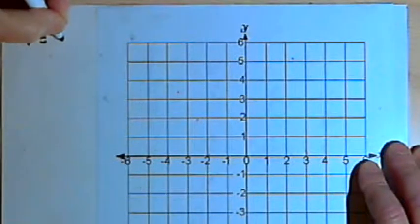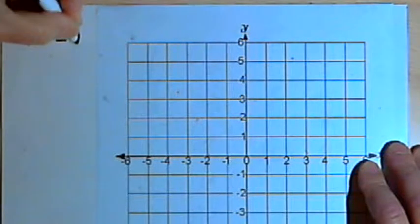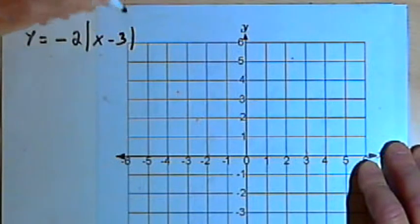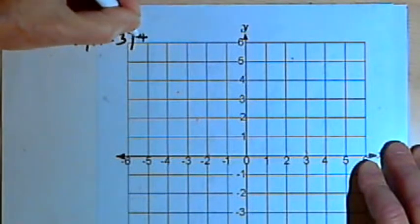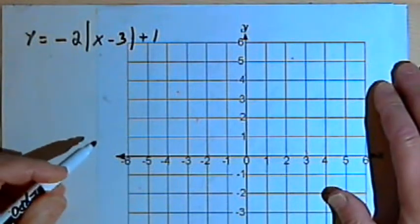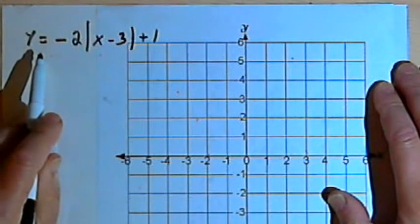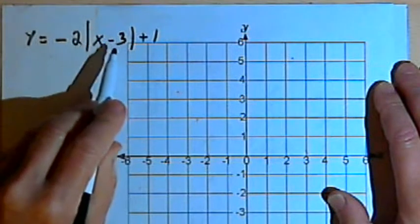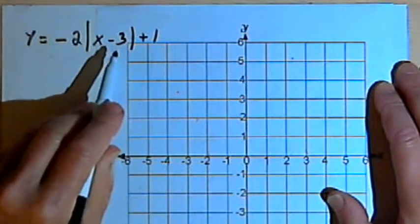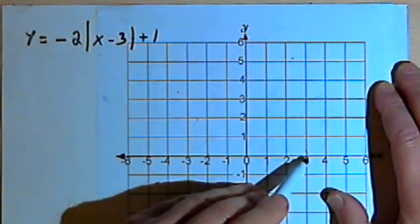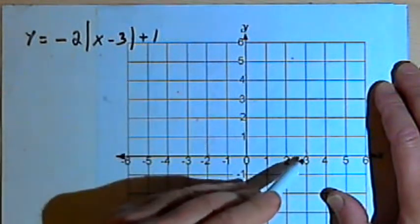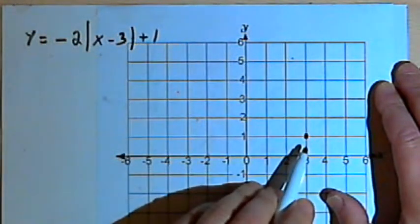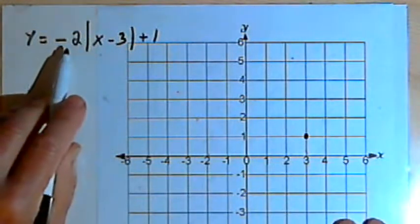Let's try putting a bunch of these together. So let's try y equals negative 2 times the absolute value of x minus 3 plus 1. What I want to do is see where the point of that V has moved to. The minus 3 tells me the point of the V is going to move 3 units over to the right, and the plus 1 tells me it's also going to move up 1. So the point of the V will be at 3, 1.